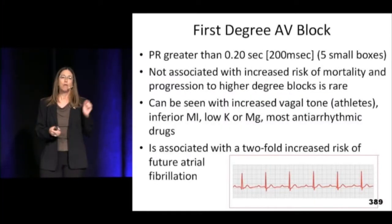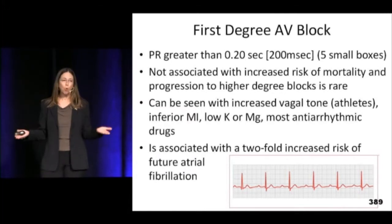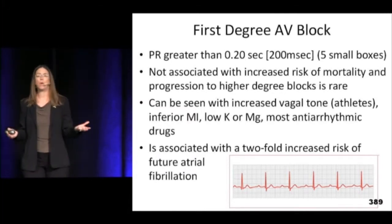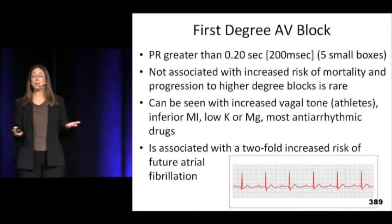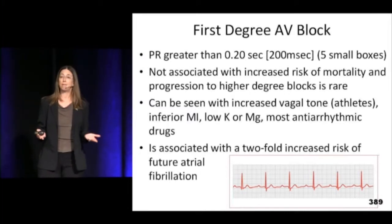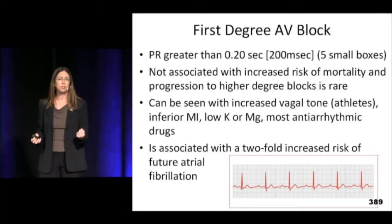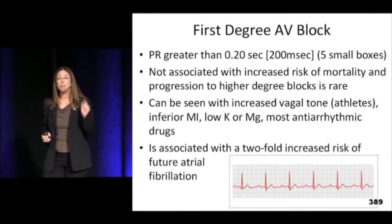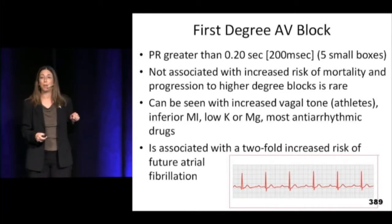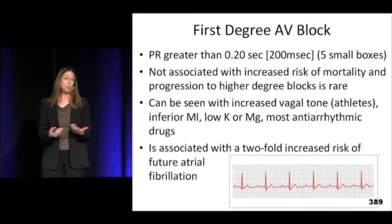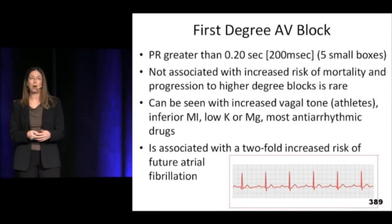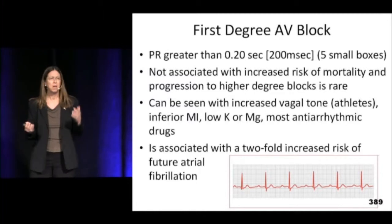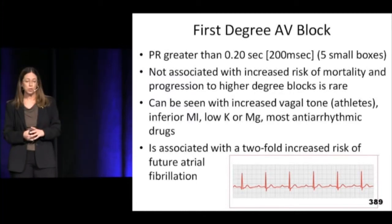Let's start with the blocks. First degree AV block is where it takes more than 200 milliseconds for that P wave to make the QRS do something. If you happen to be a marathon runner, odds are you may have first degree AV block with a totally normal, healthy heart. It is not necessarily indicative of pathology. We do see it in people with heart disease and on certain medicines. Overall, it tends to be asymptomatic and doesn't usually cause much trouble.